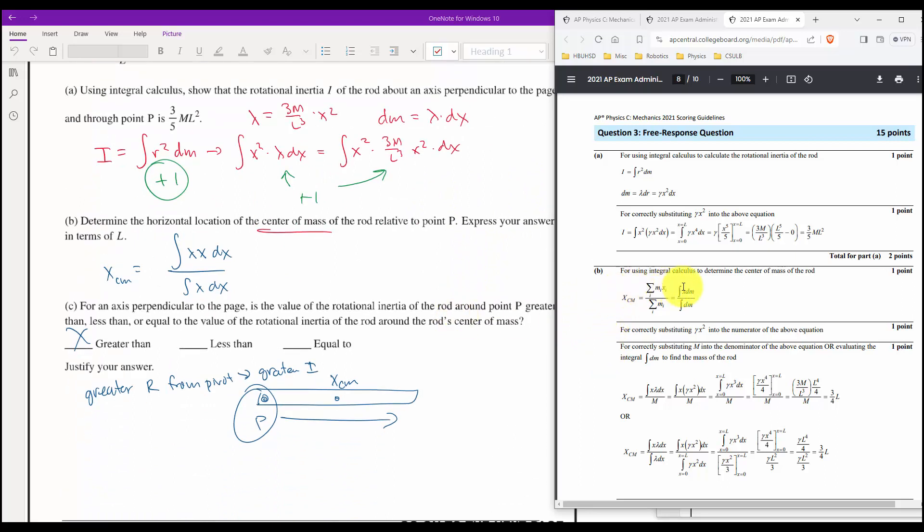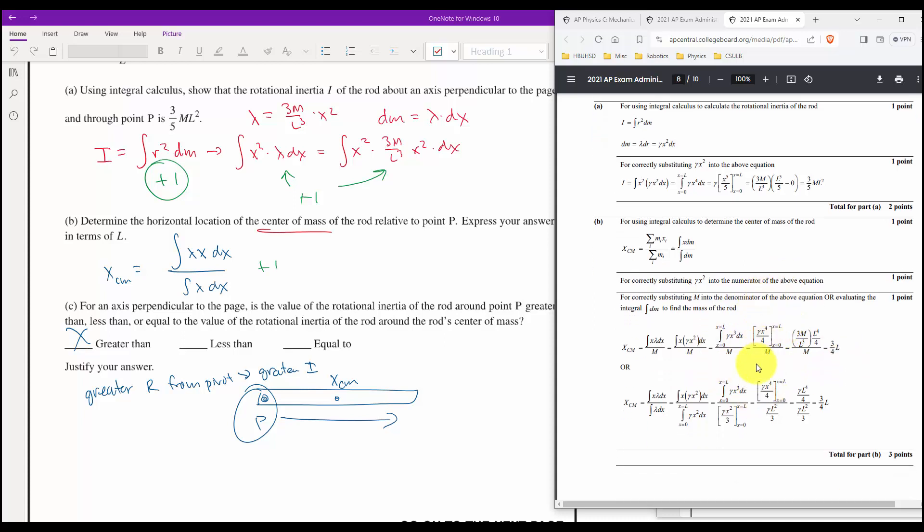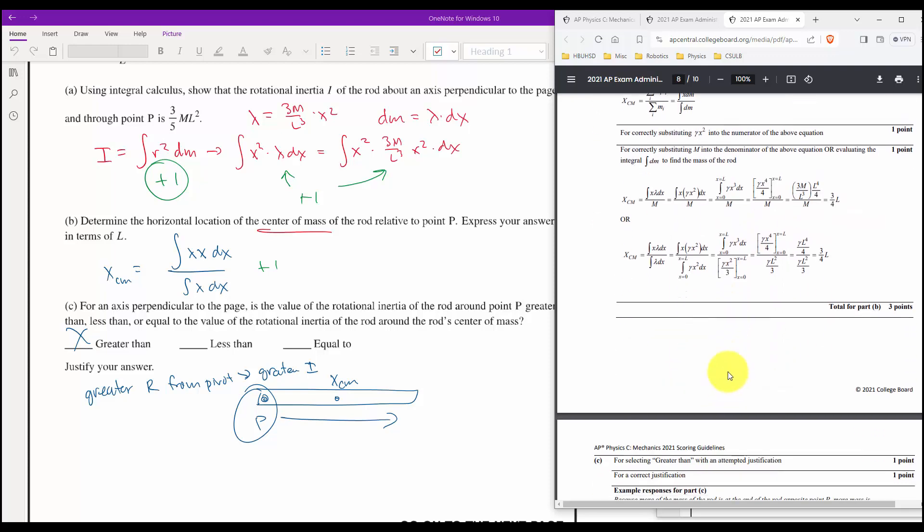B, for using integral calculus to determine the center of mass of the rod. So we wrote in the filled-in version of these. So instead of Xdm, we wrote X lambda dx, X lambda dx here. And then, so we did not substitute in gamma X squared. Didn't take that step. So we get one point there. We wouldn't get the second point.